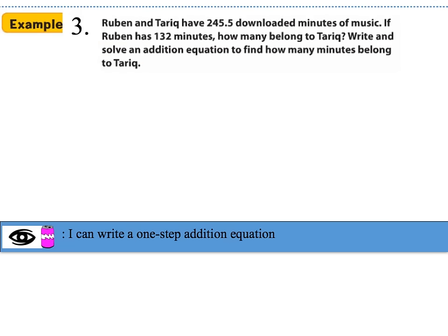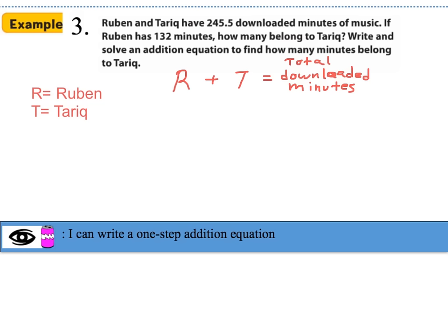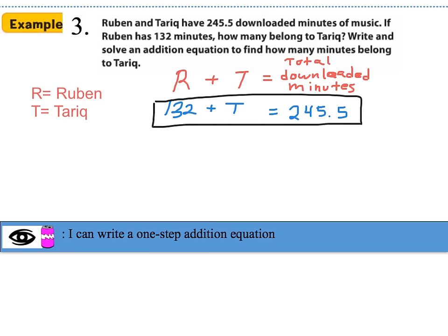For example 3: Rubin and Tariq have 245.5 downloaded minutes of music. If Rubin has 132 minutes, how many belong to Tariq? Write and solve an addition equation to find out. We'll let R stand for Rubin and T stand for Tariq. The equation is: Rubin plus Tariq equals total downloaded minutes, so 132 plus T equals 245.5. Our job is to figure out the value of Tariq's minutes.